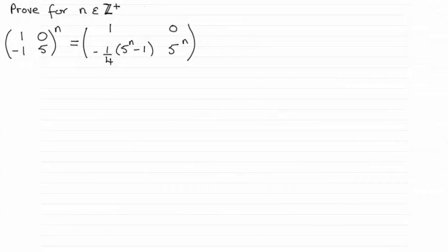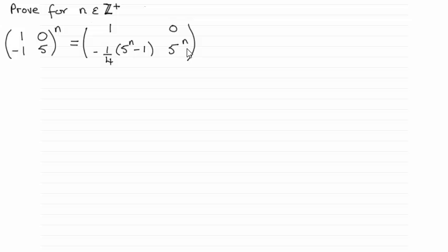Hi there. For this question we had to prove by mathematical induction that for all positive integers n, the matrix [1, 0; -1, 5] to the power n was equal to [1, 0; (-1/4)(5^n - 1), 5^n]. In order to do this, I'm assuming that you have some idea of mathematical induction.